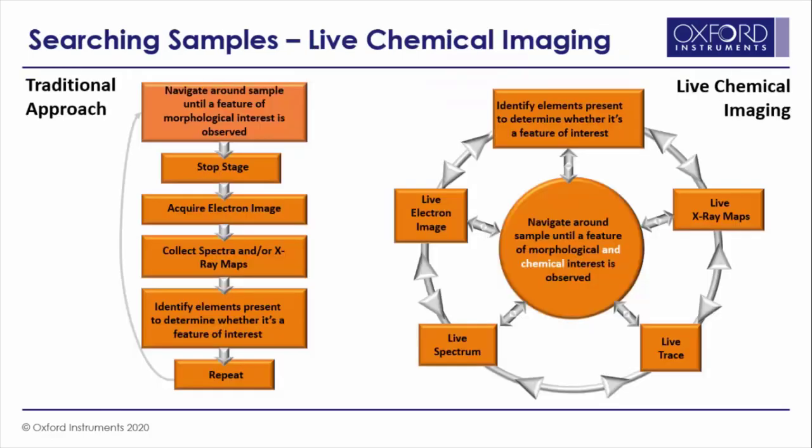Once we're ready to start our analysis, we then come across a common job: finding a site of what we want to analyse. This could be a very specific point on a sample, perhaps a particular component on a semiconductor chip, or it could be a site which is representative of the sample as a whole, containing the full range of phases present. Traditionally, we would approach this task in a linear way — navigate around until we see a feature of interest, acquire an image, then acquire a spectrum or map to confirm the compositional characteristics. If it doesn't match what we're after, we restart the process again. The modern option, available in AztecLive, is to use live chemical imaging, and this is something we have been using extensively since working remotely.